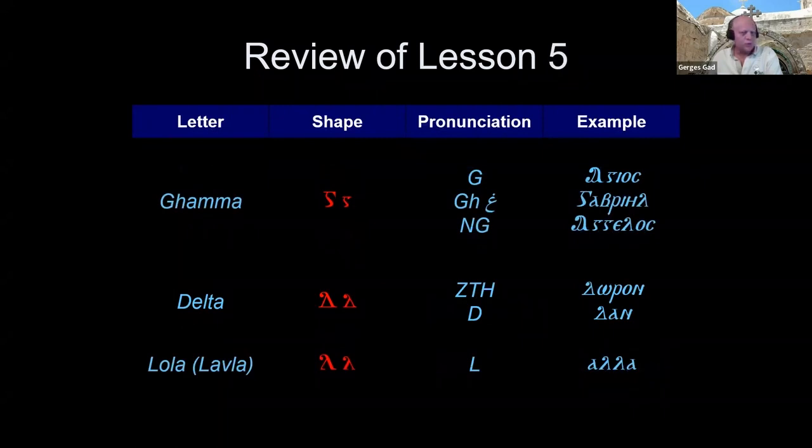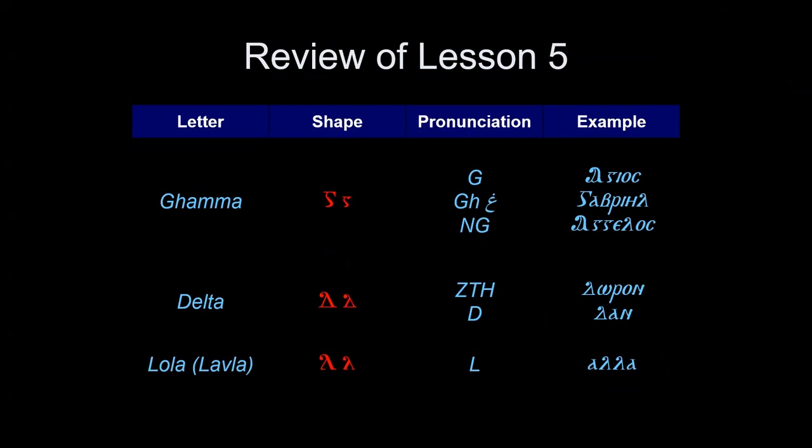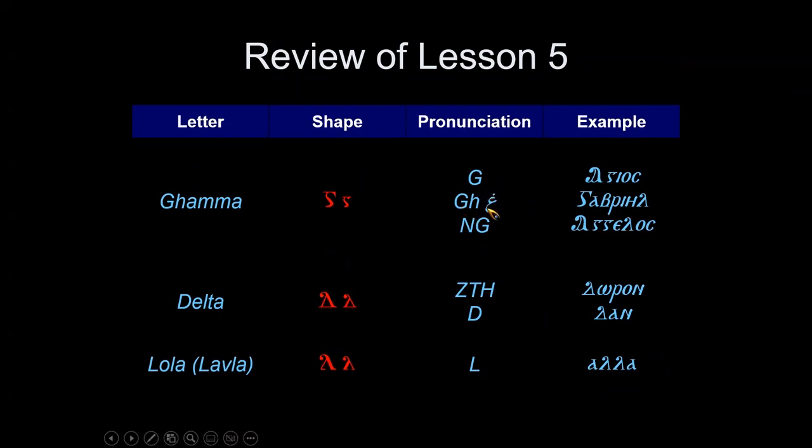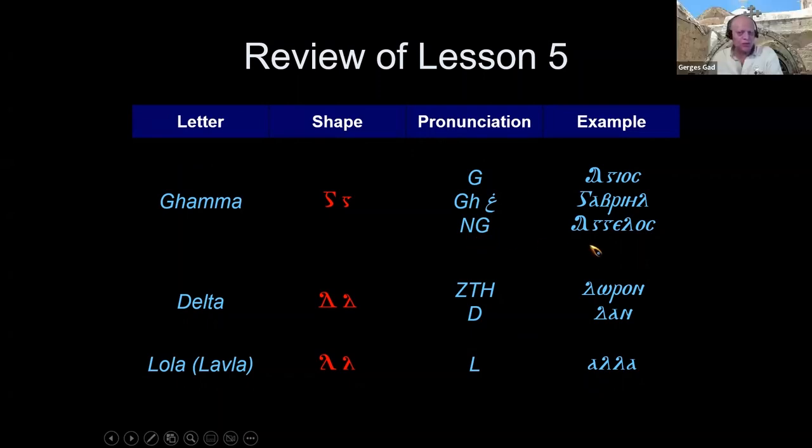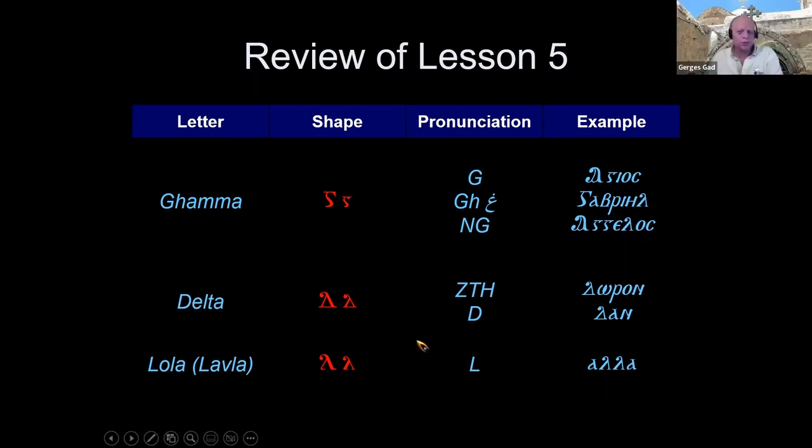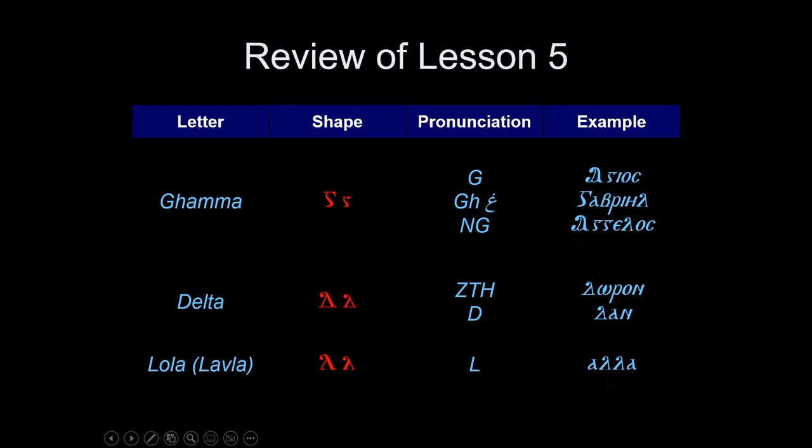Julia, you want to do the next one? That one looks like an S but it's pronounced G or N, or NG if there are two together. Good. Next one, Delta pronounced as Z, T, H, or D. Good. Lola pronounced as an L. Very good, thank you.